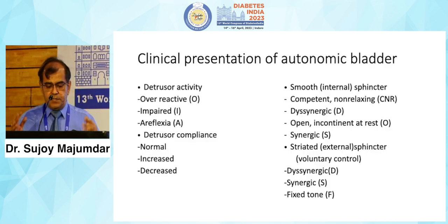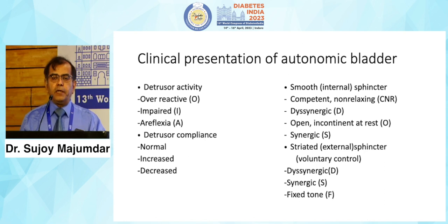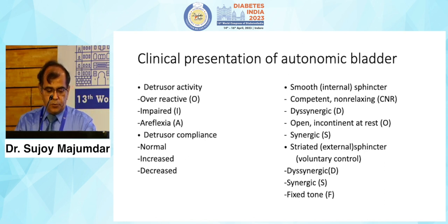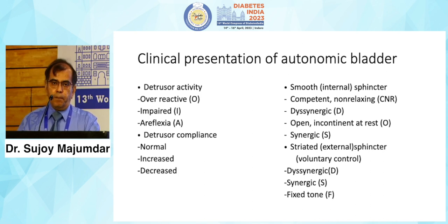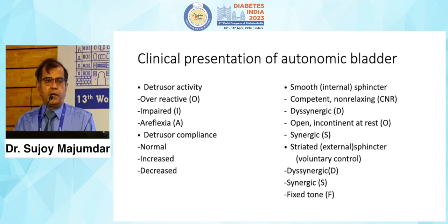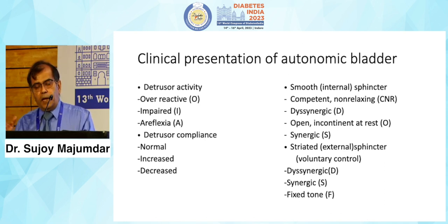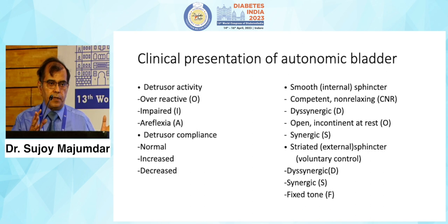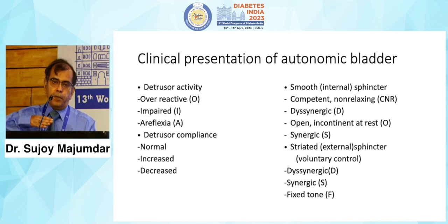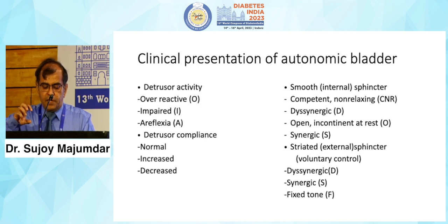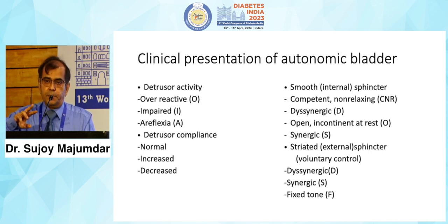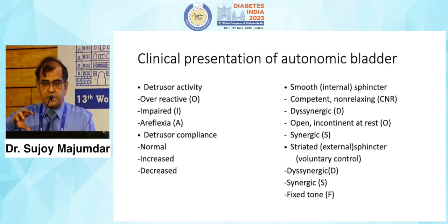The clinical presentations of the autonomic bladder are a plethora. It could be an overactive detrusor, an impaired detrusor, or a complete adreflexia where the detrusor simply doesn't work. Detrusor compliance could be normal, increased, or decreased. The internal sphincter could be competent, incompetent, or dyssynergic. There can be a complete lack of synergy between external and internal sphincters, or the external sphincter can go into a fixed tone — something that happens in patients with diabetes and prostatic hypertrophy, preventing sphincter relaxation even when the bladder is overfilled.